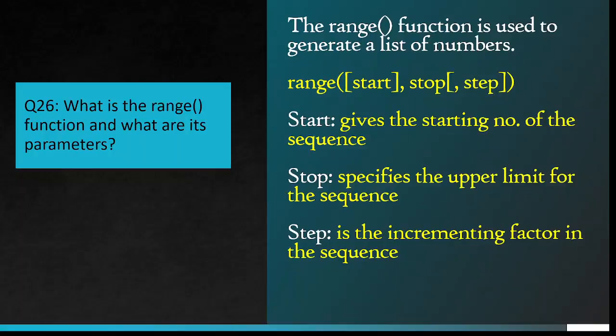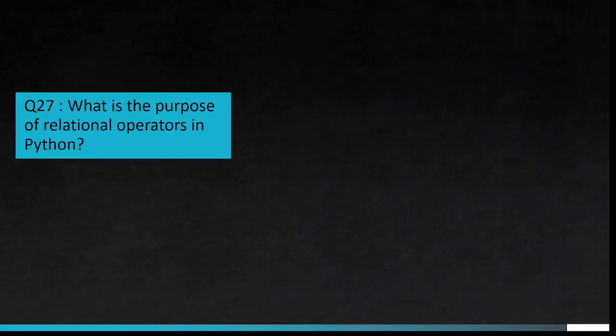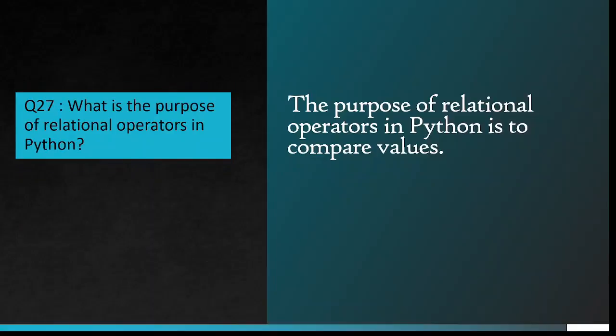Range(start, stop, step). Start gives the starting number of the sequence. Stop specifies the upper limit for the sequence. Step is the incrementing factor in the sequence. Question number 27: What is the purpose of relational operators in Python? The purpose of relational operators in Python is to compare values.